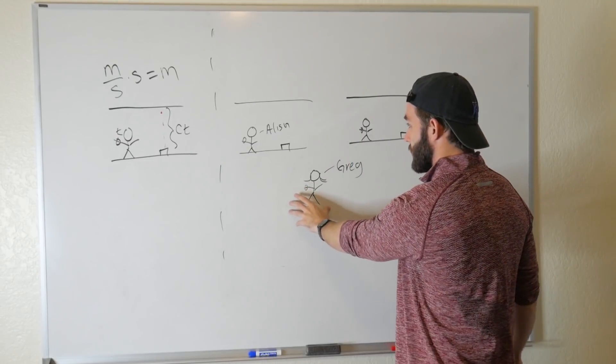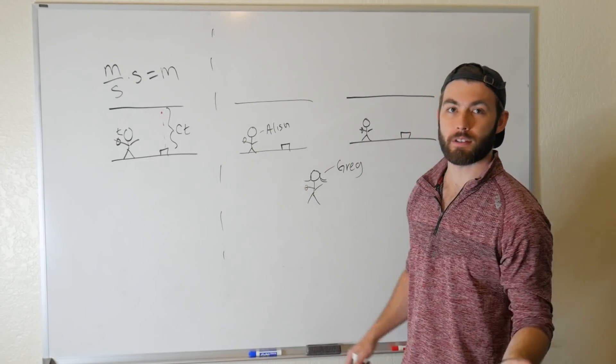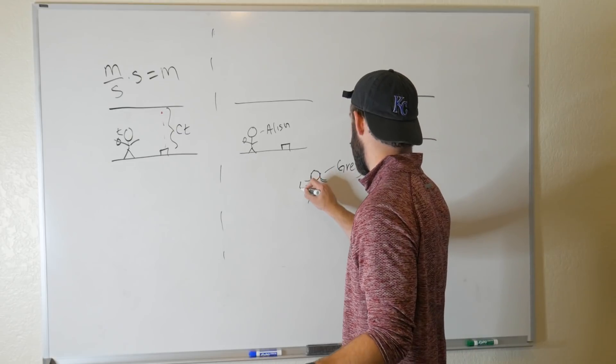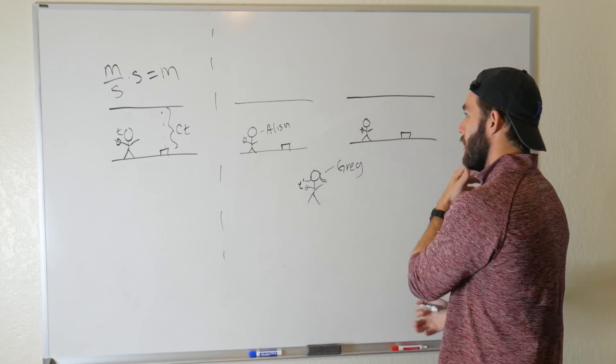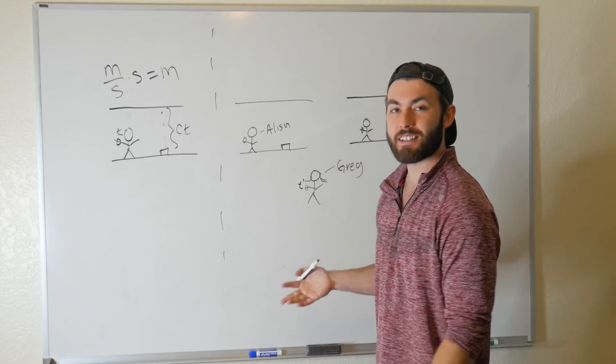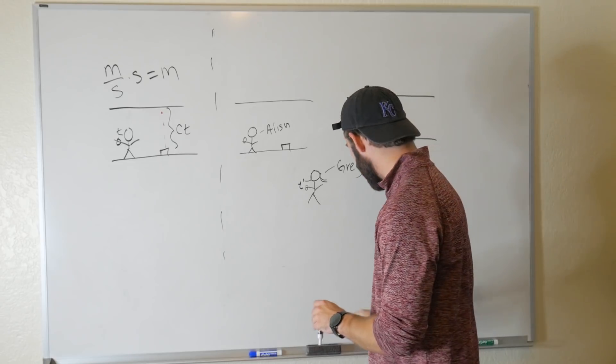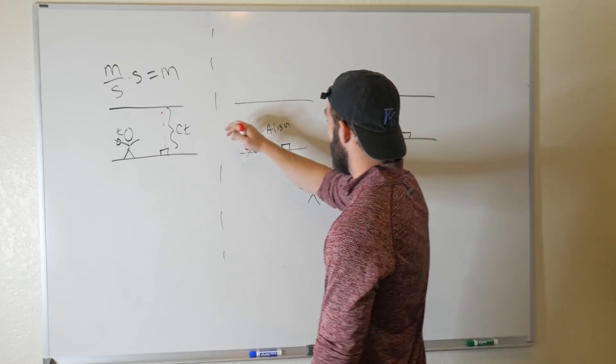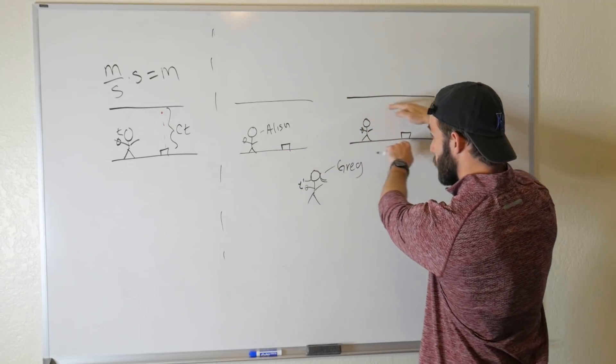Well, Greg has a watch as well, and she wants to measure how long this whole event takes to happen as well, and she's going to be measuring some time, let's call it T prime. But from her perspective, light is going to be traveling a longer path, right, because she's not just going to be seeing it go up and down, because from her perspective the ship is moving.